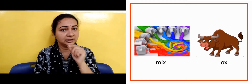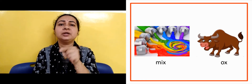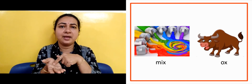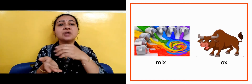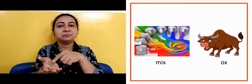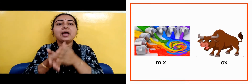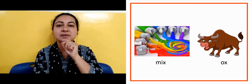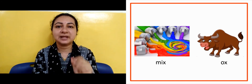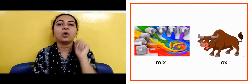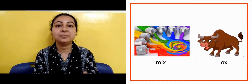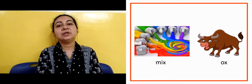The next word is 'mix': M-I-X. Here it is shown with color tubes — we mix colors together. So 'mix' means combining two or three things. Another one is an animal: 'ox', O-X. Ox is generally seen on farms and helps us a lot.